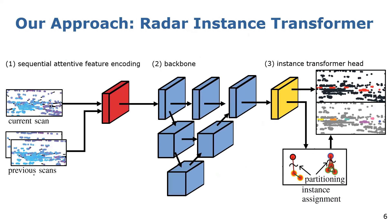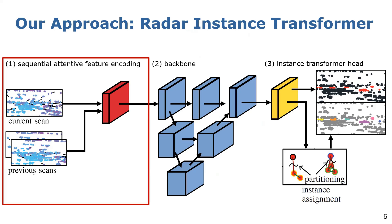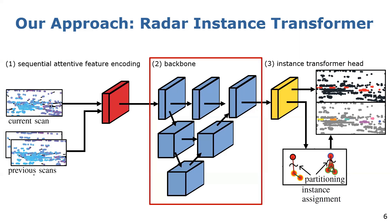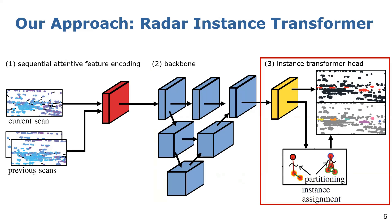The overall architecture of our radar instance transformer can be split into three parts. First, we propose our sequential attentive feature encoding to enrich the current point cloud with temporal information. Second, our backbone, which keeps the point cloud intact on the top level to mitigate information loss due to downsampling — the point clouds are processed in parallel streams and enriched with high-level features. And third, our instance transformer head, where we propose an attention-based graph clustering to perform the instance assignment. We introduce our temporal encoding and the instance association in the following.